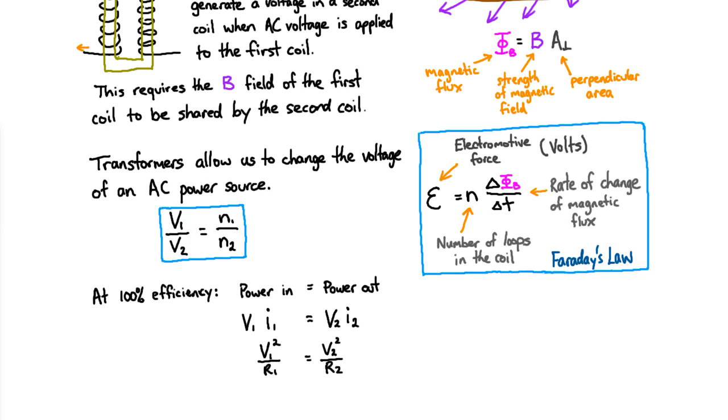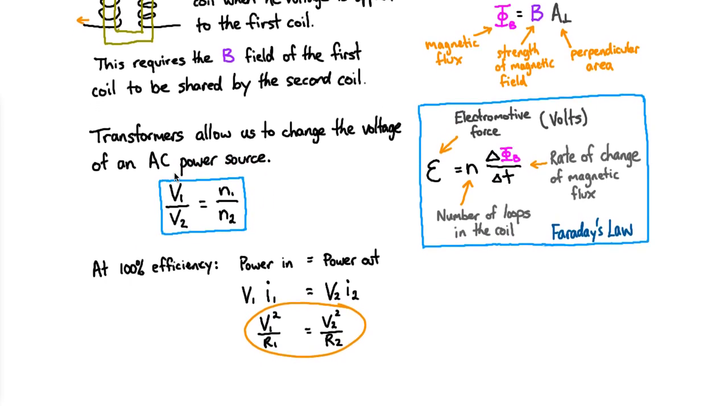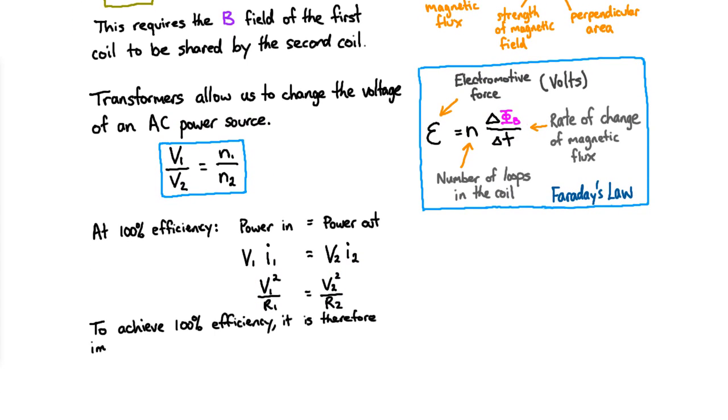So how to resolve that? Remember this second one only applies at a hundred percent efficiency, whereas this one always applies. So actually that's telling us something very important about how to build a transformer so that it works efficiently. You have to carefully match the resistance of the power source and the first coil with the load and the second coil in order to satisfy this equation and this equation at the same time. That's the only way you can get a hundred percent efficiency. And this is called impedance matching.